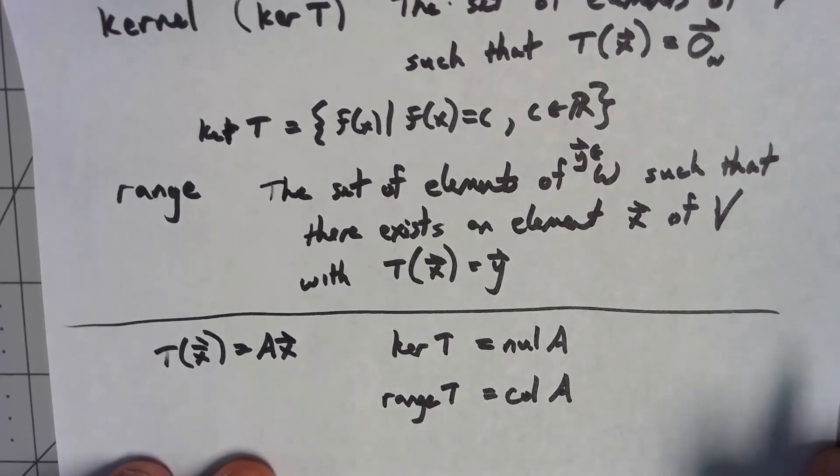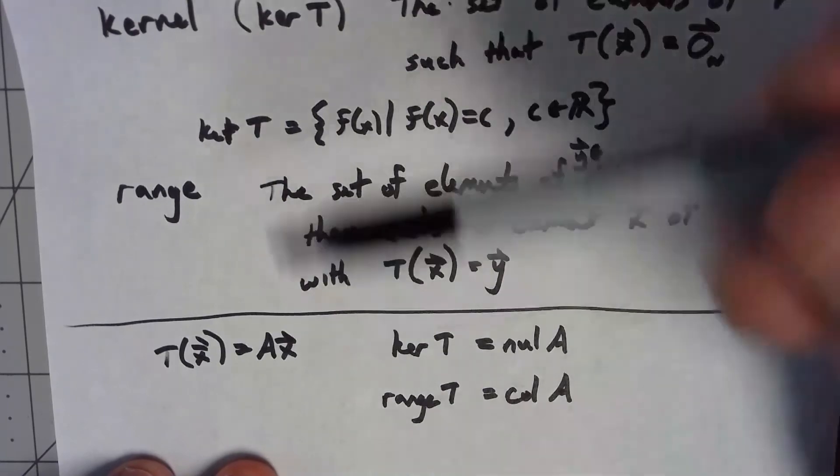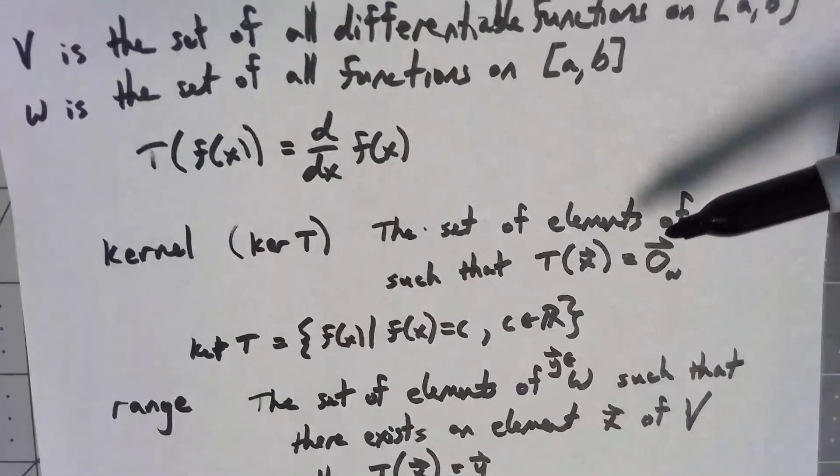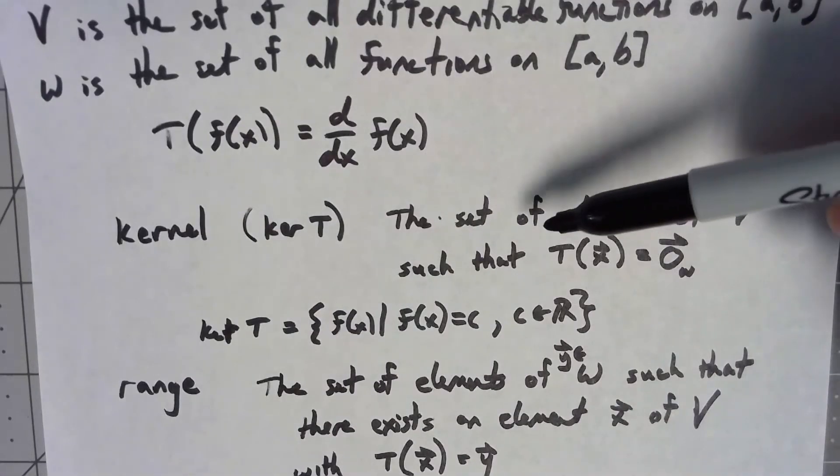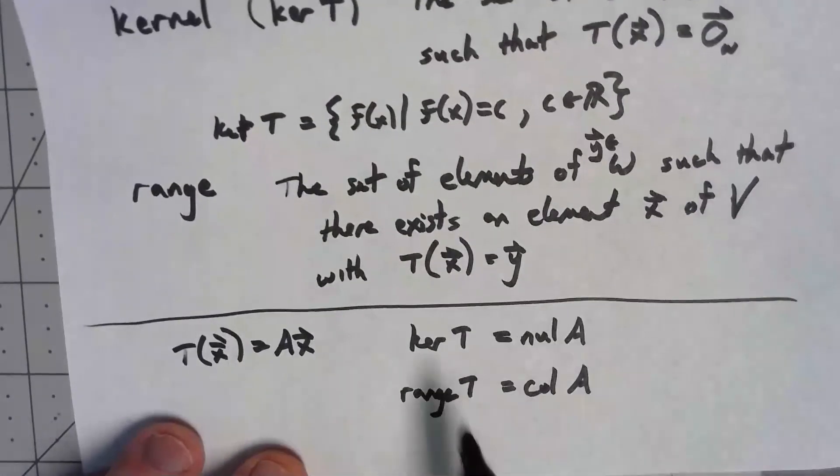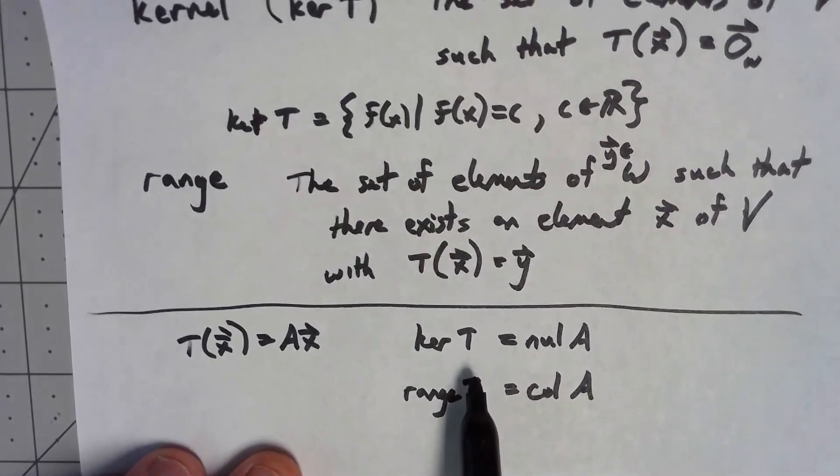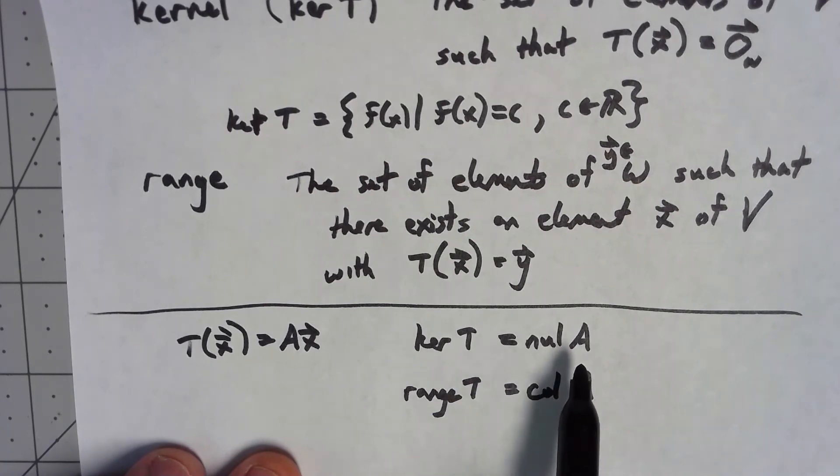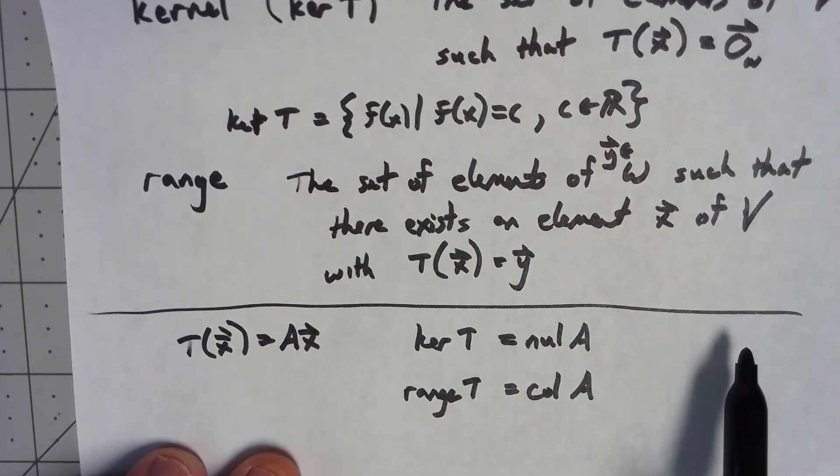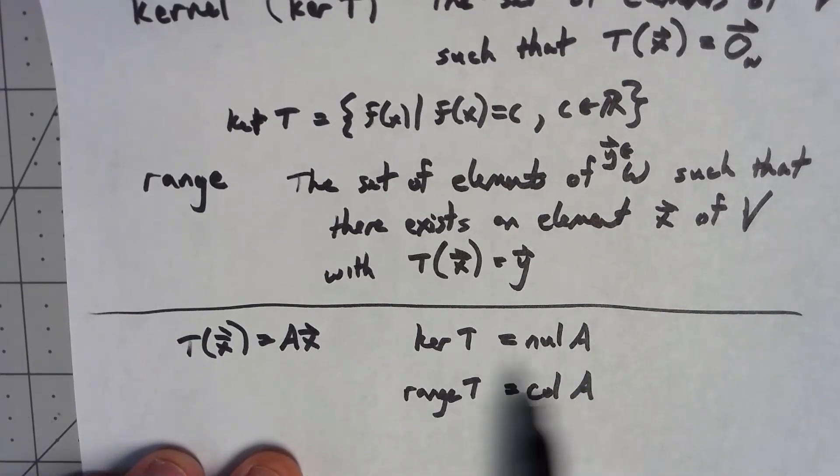It's fairly easy to see that if we just think in terms of what we're doing here. The kernel of linear transformation is such things such that the transformation gives us the zero vector. Well, that's pretty much exactly what the kernel is, or the null space of A. The things that when we multiplied by A, we got zero. So really, in this particular case, the kernel and the null space are just different ways of saying the same thing.